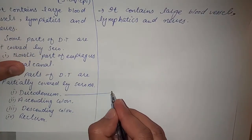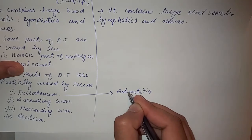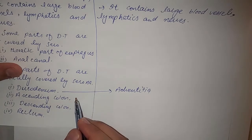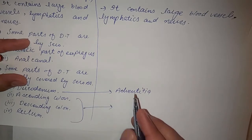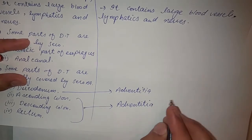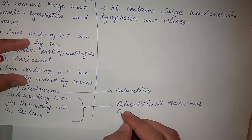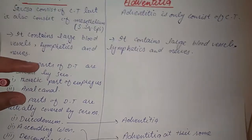We can see that the duodenum also contains adventitia. These parts — duodenum, ascending colon, descending colon, and rectum — also contain adventitia in addition to partial serosa coverage.